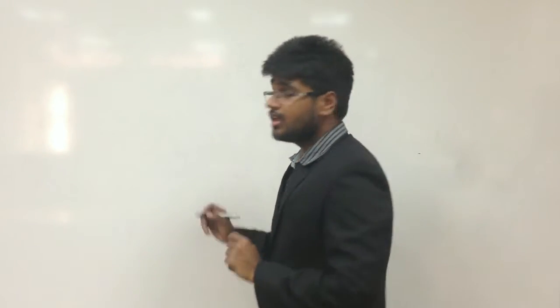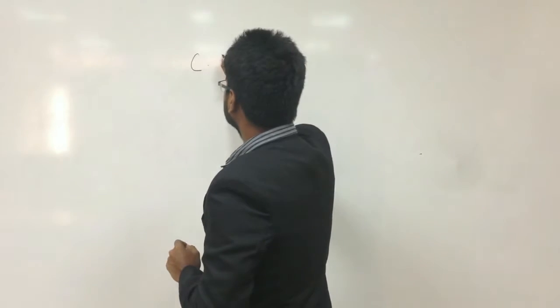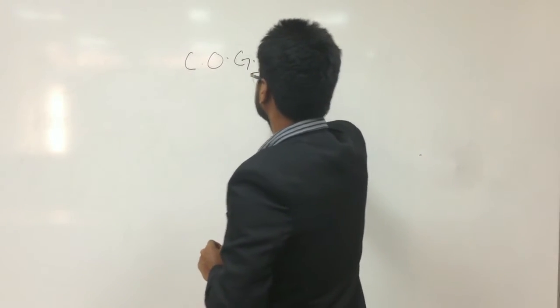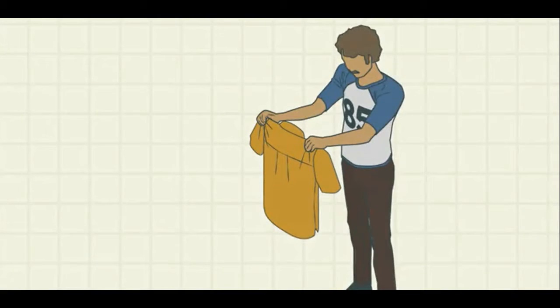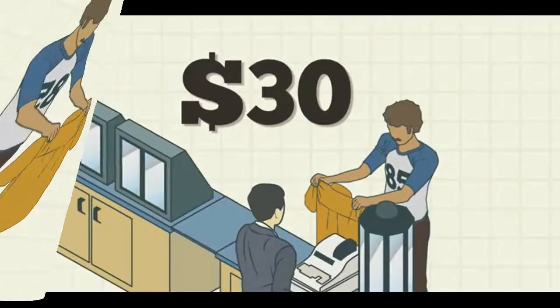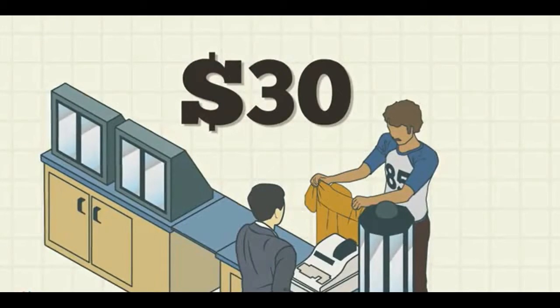Now the very important part of this price which each of us incurs is the cost of goods sold. Let's take an example of a person buying a simple shirt from a retail outlet. The cost of the shirt is $30.